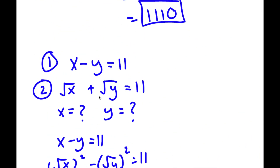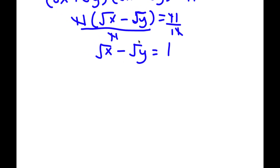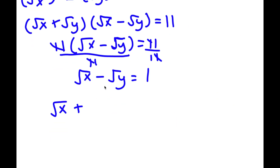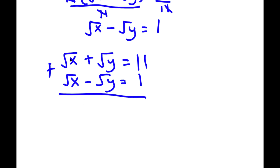So now I have two equations: the square root of x plus the square root of y is equal to 11, and the square root of x minus the square root of y is equal to 1. If I go ahead and add these two equations, the square root of x plus the square root of x gives 2 times the square root of x. The square root of y minus the square root of y is 0, so we get 2 root x is equal to 11 plus 1, which is 12.